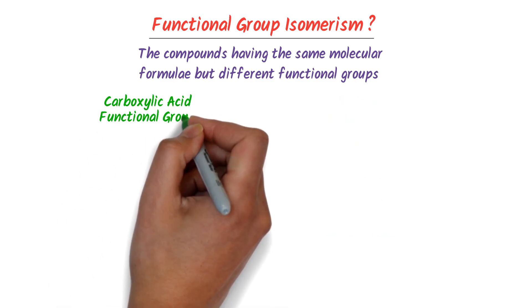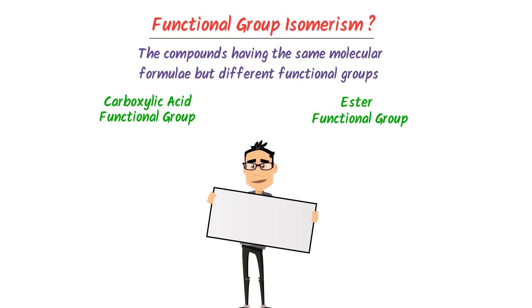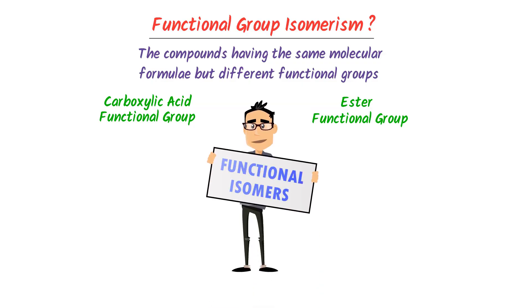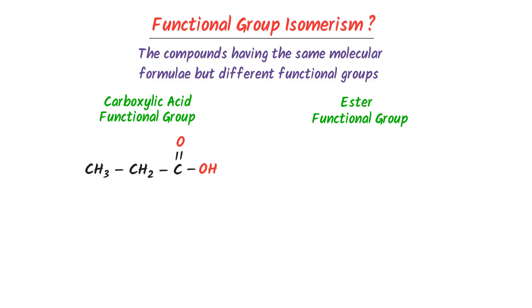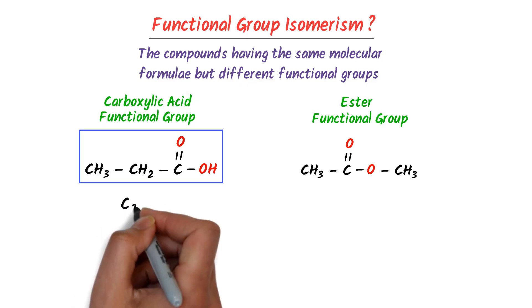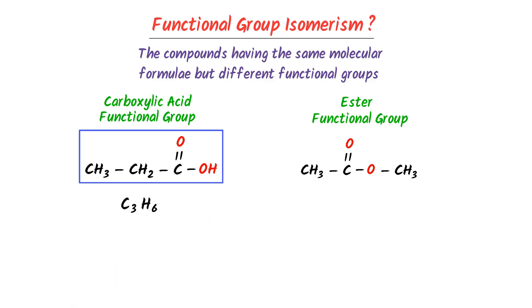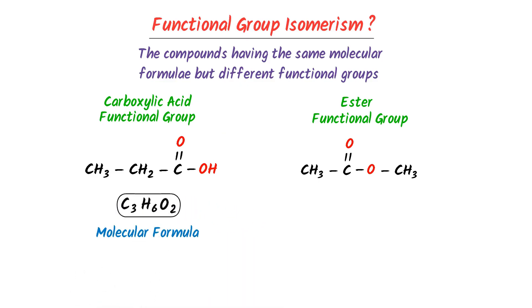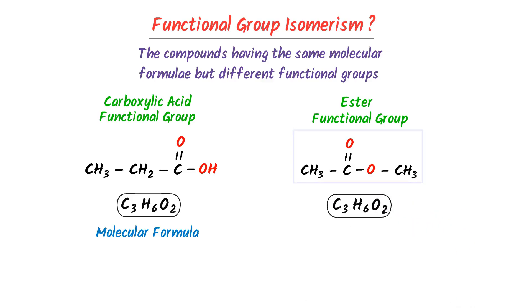Thirdly, consider the functional group of carboxylic acid and the functional group of ester. Functional isomers exist between them. For example, consider this carboxylic acid and this ester. In the carboxylic acid molecule, there are three carbon atoms, six hydrogen atoms, and two atoms of oxygen. In the ester molecule, there are also three atoms of carbon, six atoms of hydrogen, and two atoms of oxygen. So the molecular formula of carboxylic acid is C3H6O2 and the molecular formula of ester is also C3H6O2.